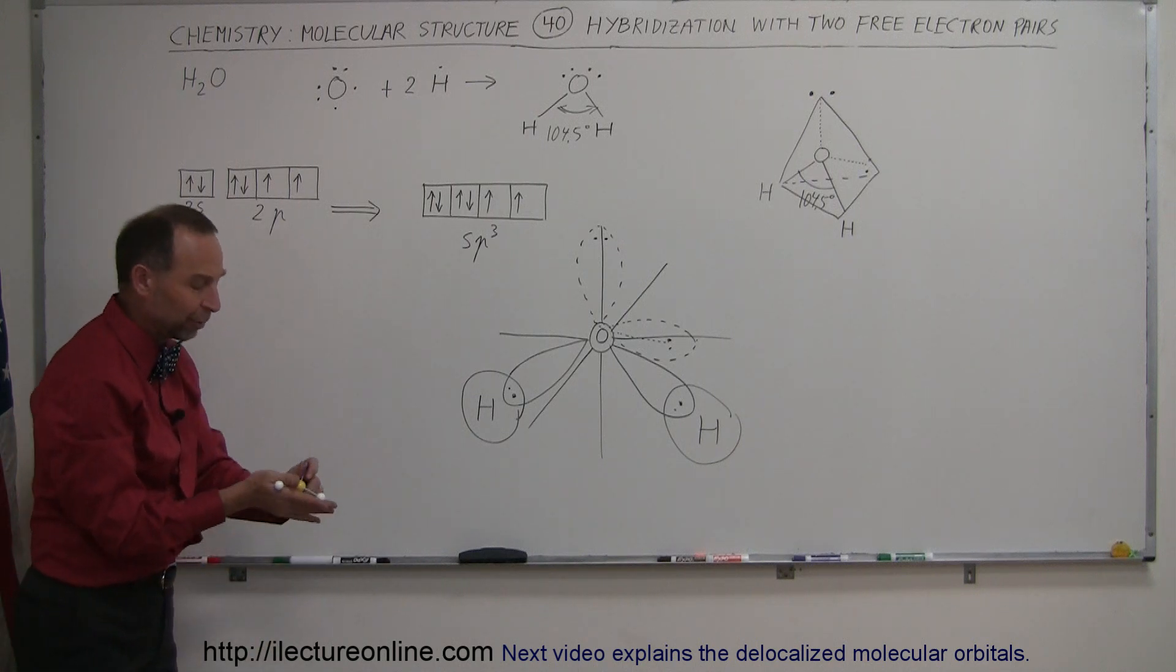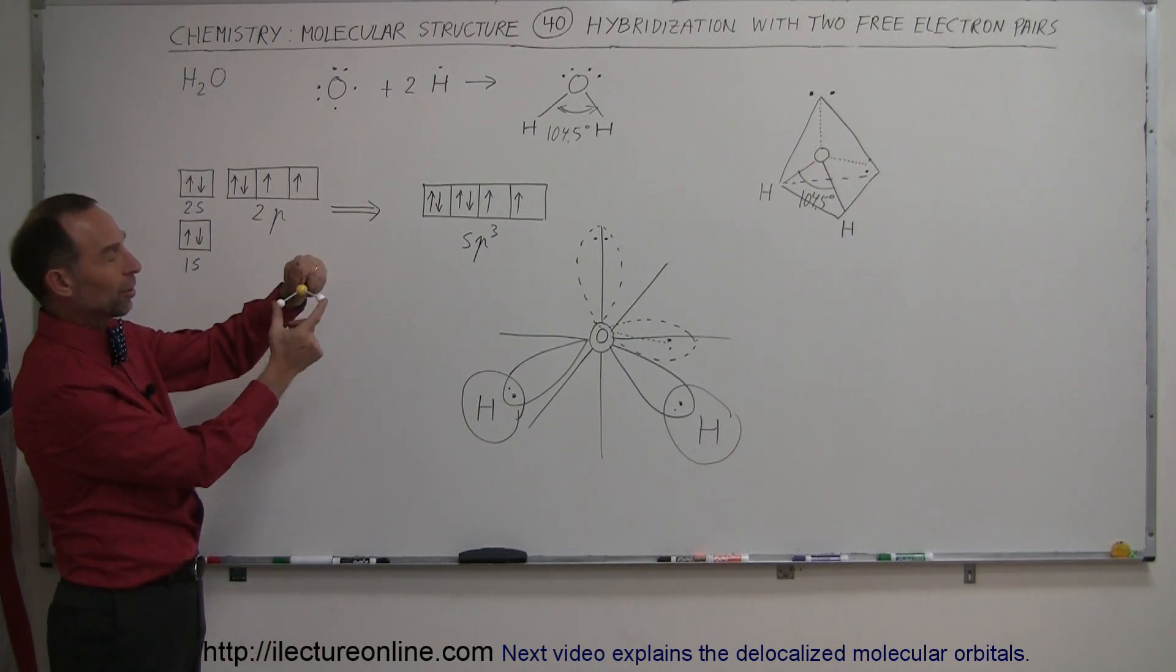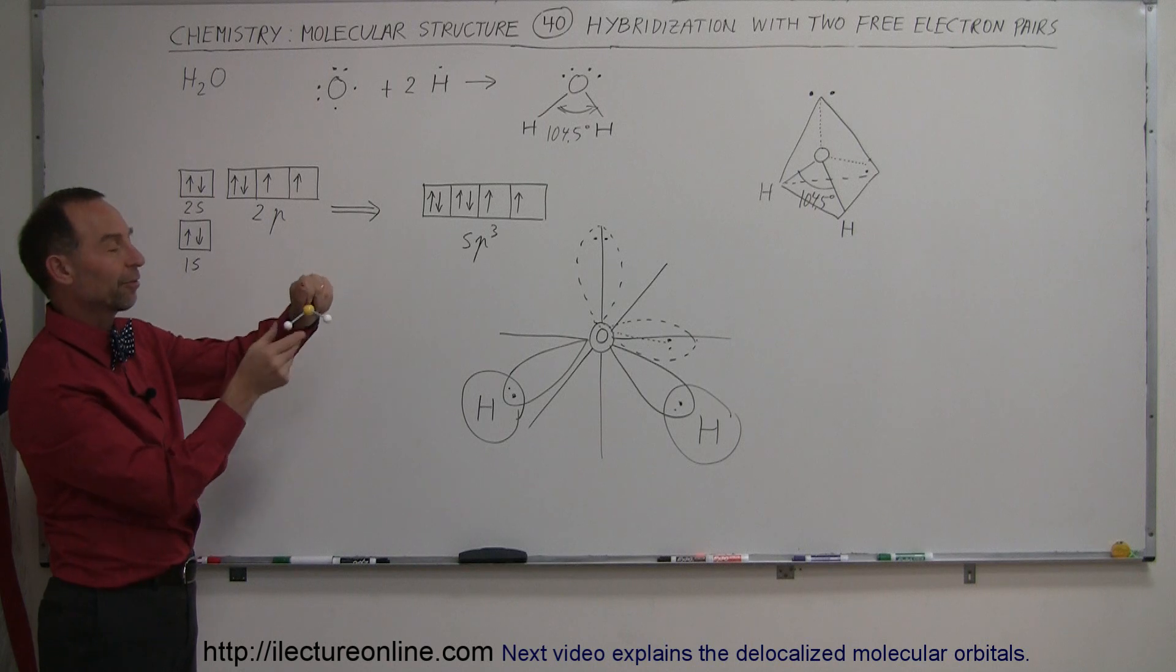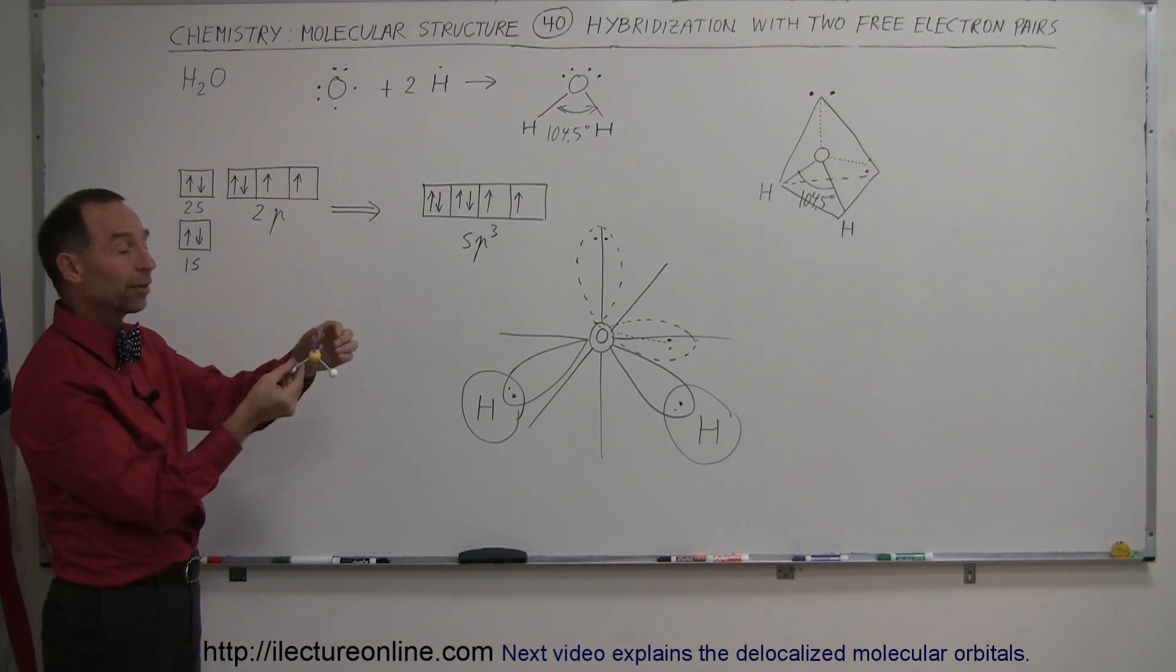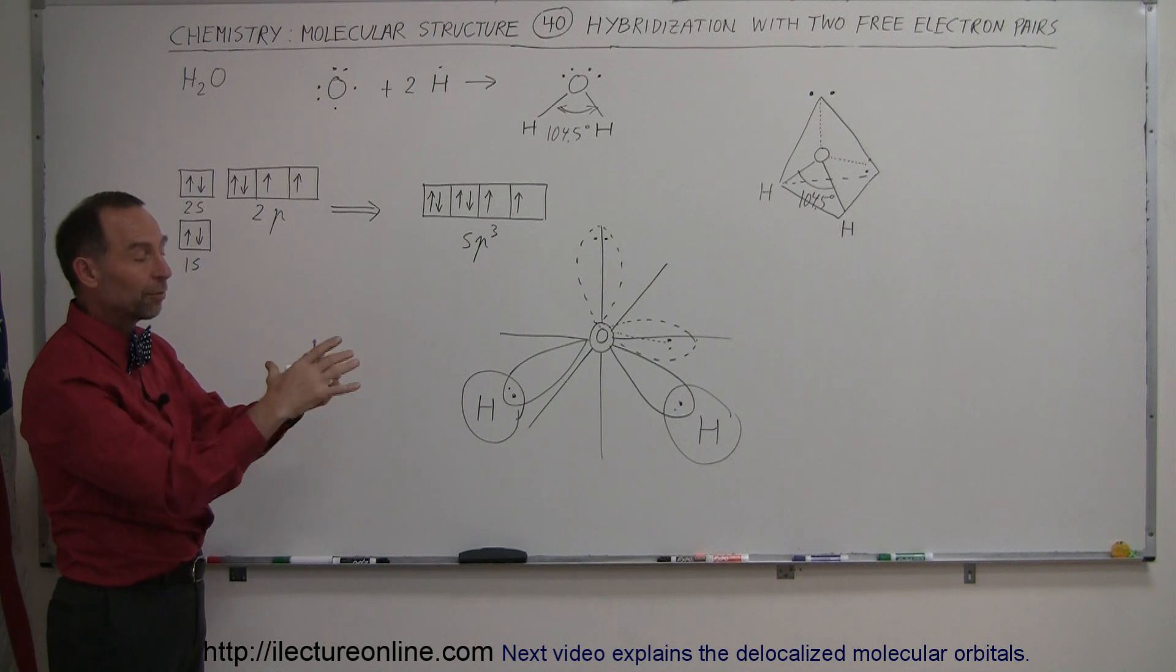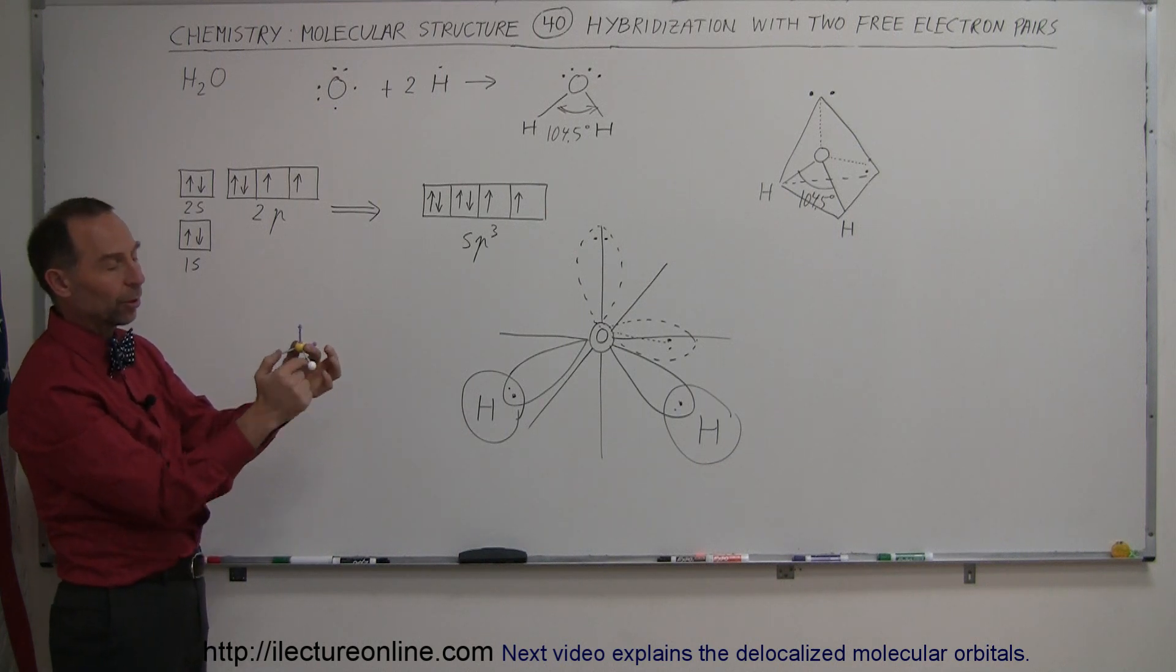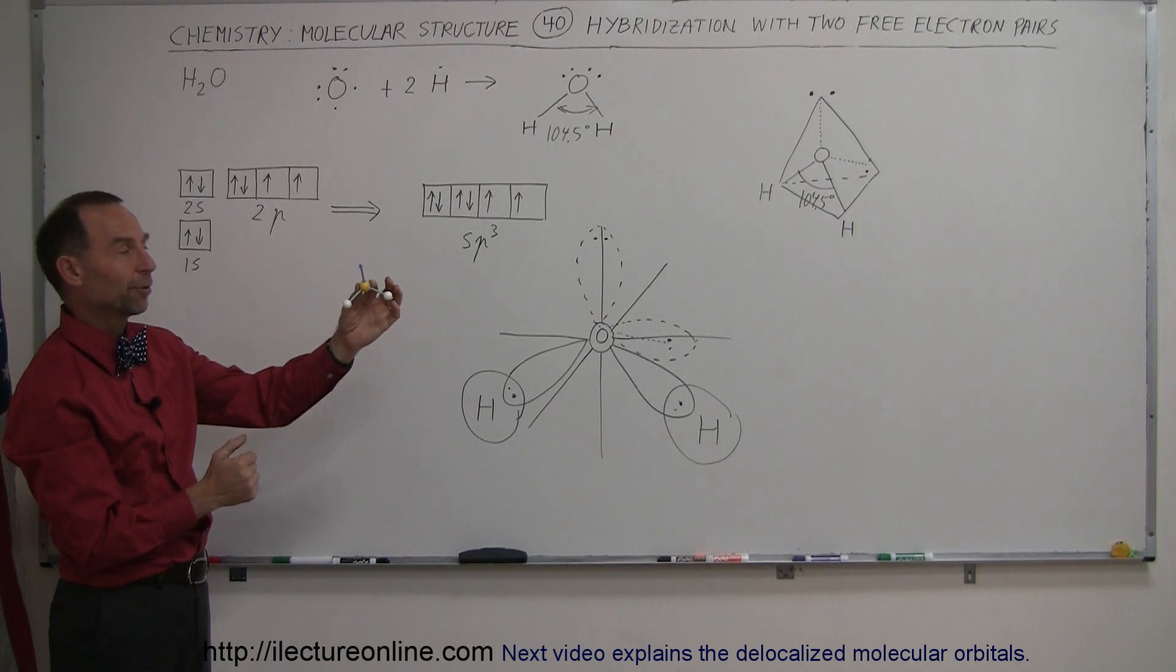Normally, we tend to think of water as being simply the oxygen with the two hydrogens, but we tend to forget that there's two orbitals there that are filled with electrons, two free electron pairs, which cause the shape of the molecule to look exactly the way it does with a bond angle of 104.5 degrees.